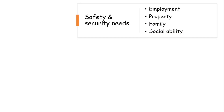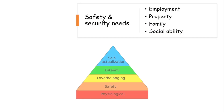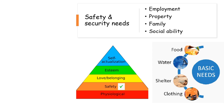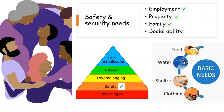Then in the next level there are safety and security needs. These needs involve the need for employment, property, family, and social ability. After we have secured our physiological needs, we need to pay attention to these needs, because safety and security is needed to live a life. We need food, shelter, and clothing which we have to earn — so we need a job. We don't need to be a millionaire, but we need a minimal amount of property to meet ends. We need family for support, and we need to be able to function optimally in a society.